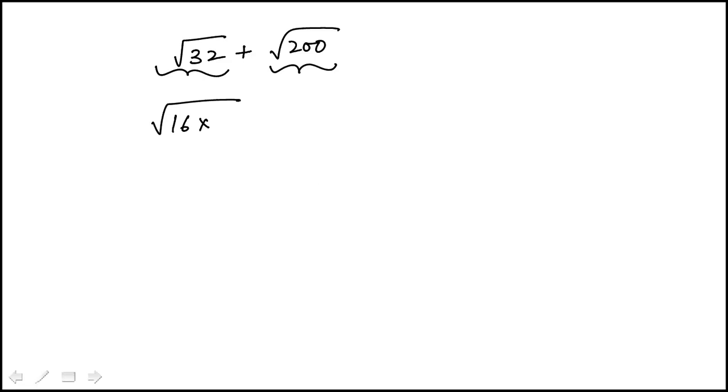So for example, in case of 32, 16 times 2. Why? Because I know square root of 16 is 4. So this can be written as 4 root 2.